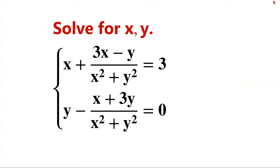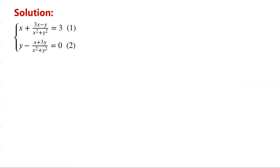Solve the system of equations. We notice that both denominators are x squared plus y squared, and the numerators are 3x minus y, and x plus 3y, respectively.